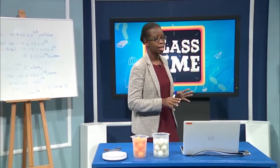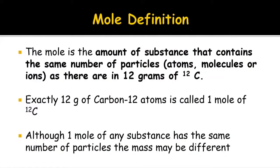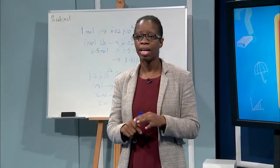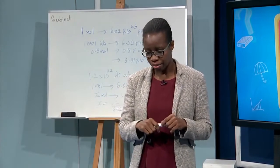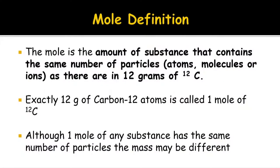By definition, a mole is the amount of substance that contains the same number of particles — 6.02 × 10²³ — as there are in 12 grams of carbon-12. Twelve grams of carbon-12 is assigned as one mole. A mole of any substance will have the same number of particles — whether atoms, molecules, or ions — but the mass may be different.